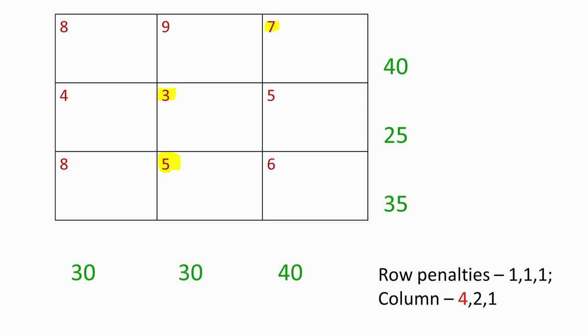So if we take any supply point or any row, we would like to allocate as much as we can in the least cost position corresponding to that row, under the assumption that if we are able to do that and get a feasible solution, the cost will obviously be less.